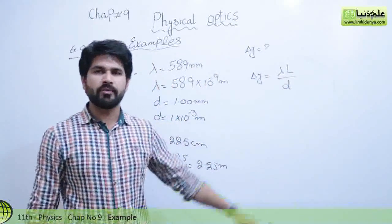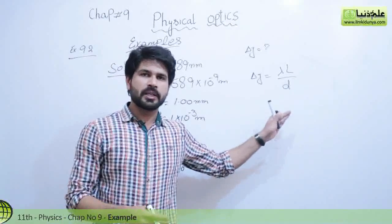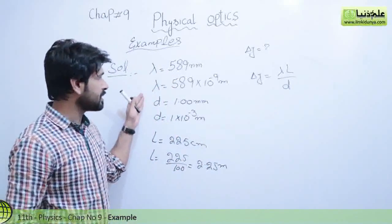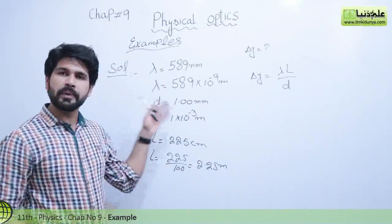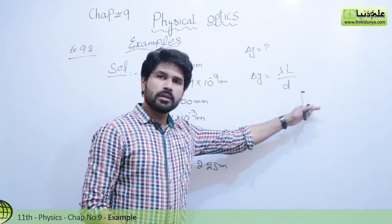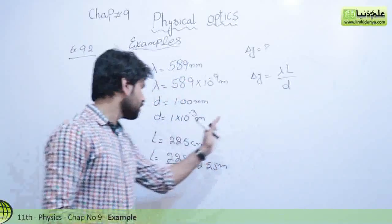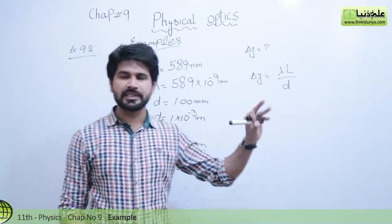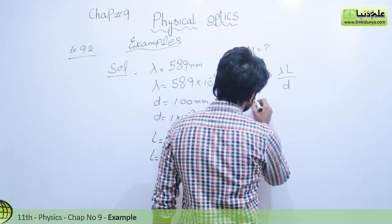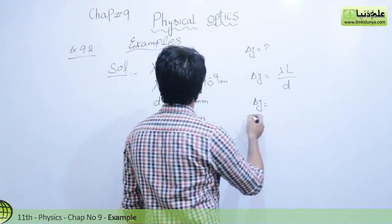Simply we will substitute the values of the given variables: lambda the wavelength, L the distance between the screen and slits, and d the distance between the slits.